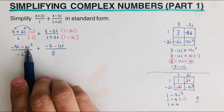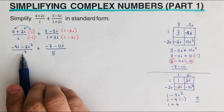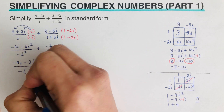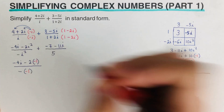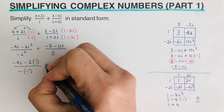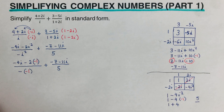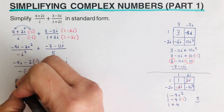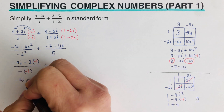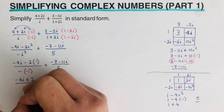Going back to the first fraction, we substitute i squared equals negative one. The numerator has negative 4i minus 2i squared — substituting gives negative 4i minus 2 times negative one, which is negative 4i plus 2. The denominator has negative i squared, which becomes positive 1. So the first fraction simplifies to negative 4i plus 2 over 1.